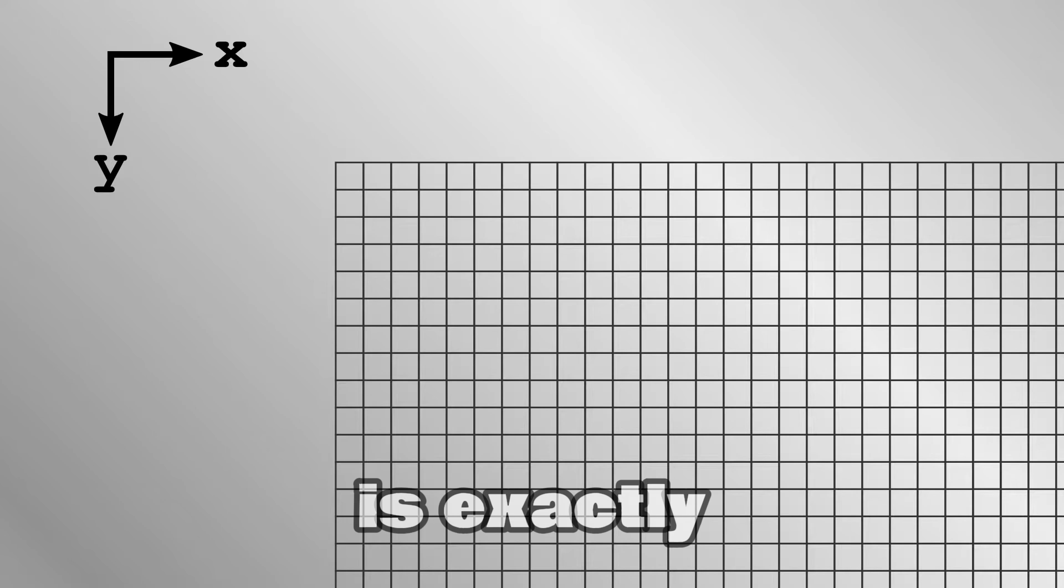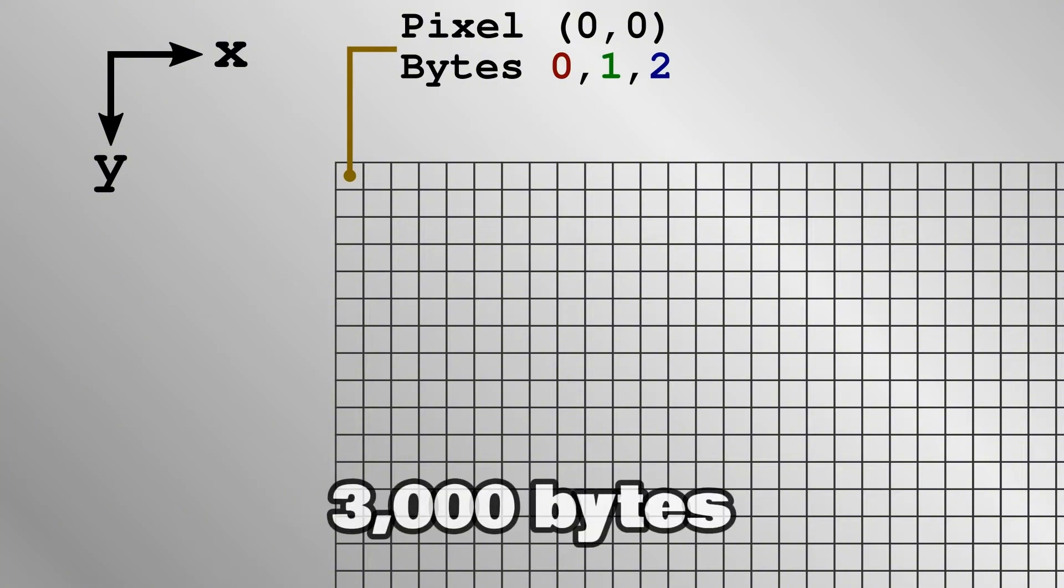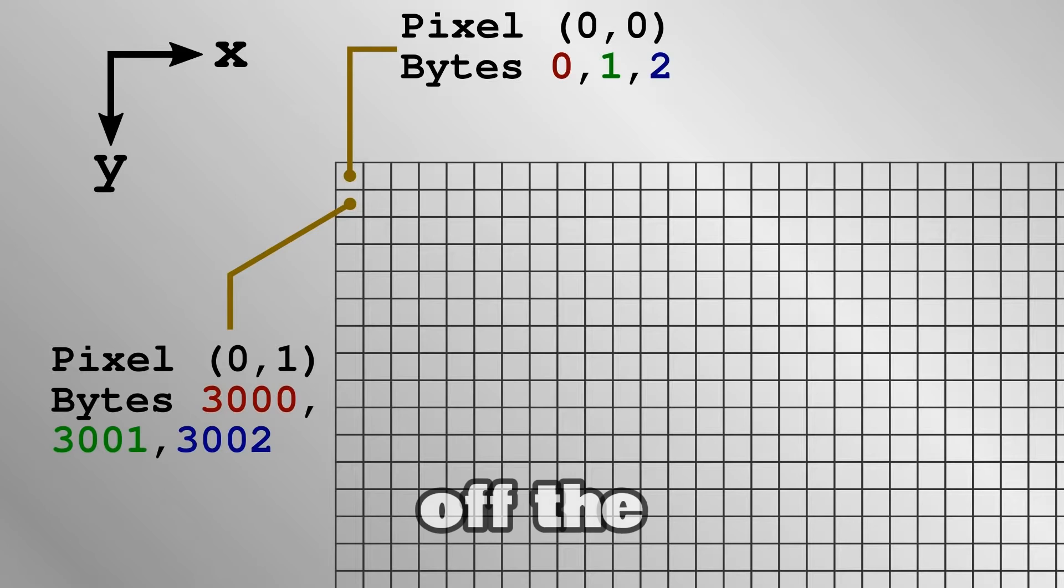For example, let's say your display is exactly 1000 pixels wide and you start with the top left pixel. If you move forward 3000 bytes in memory, or the equivalent of 1000 pixels, you will go off the end of the top row and onto the left pixel of the second row.